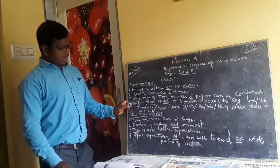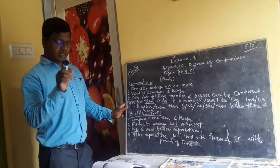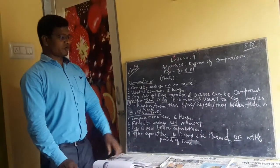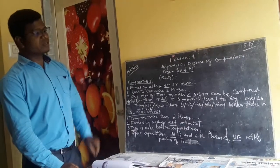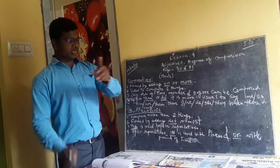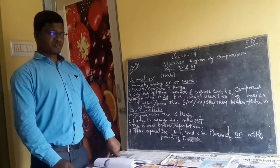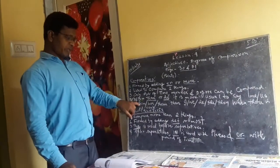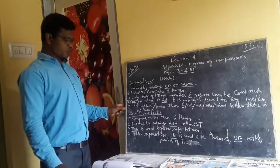Number four: after 'than' or 'as...as', it is more usual — and always good — to use the object form of pronouns: me, us, him, her, them. Remember all these four points.